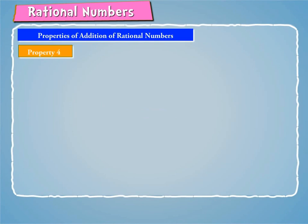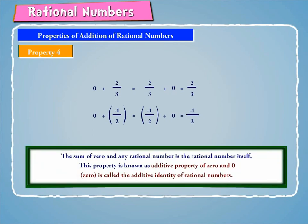Property 4: Let us consider the following examples. 0 + 2/3 is equal to 2/3 + 0, which is equal to 2/3. Also, 0 + (-1/2) is equal to (-1/2) + 0, which is equal to -1/2. Hence, the sum of 0 and any rational number is the rational number itself. This property is known as the additive property of 0, and 0 is called the additive identity of rational numbers.